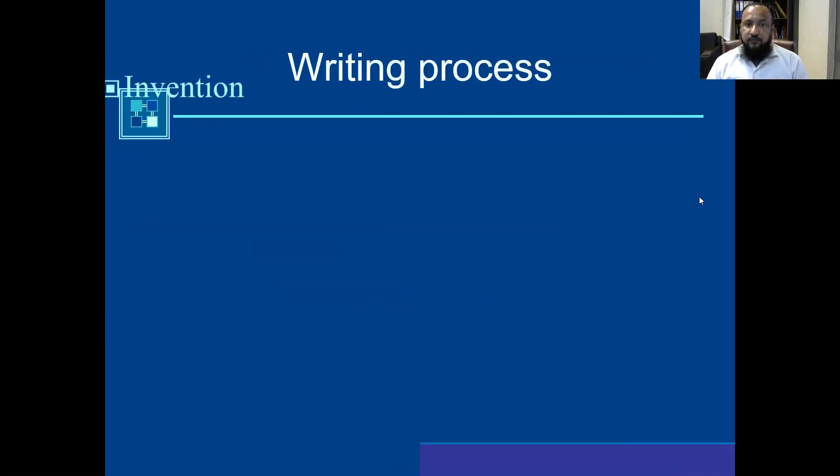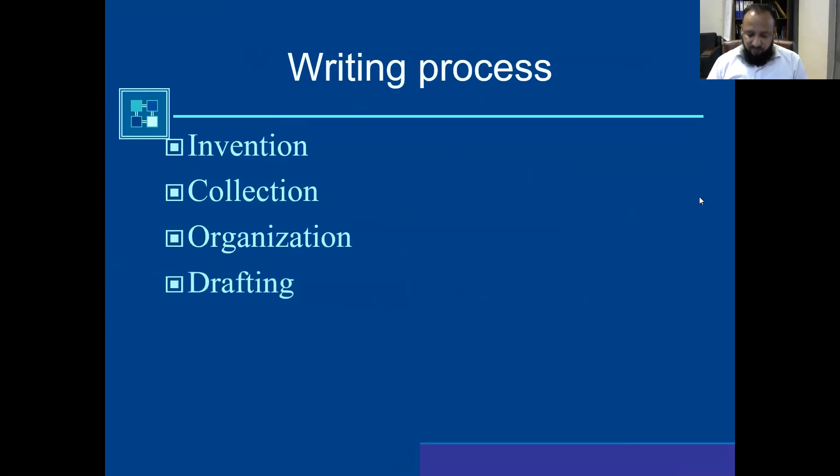Writing process. There are some steps which are involved in writing process: invention, collection, organization, drafting, revising, proofreading.